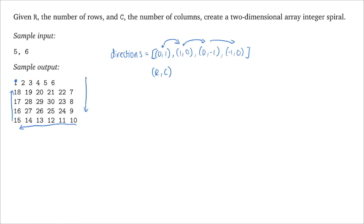To handle that, we check not only whether we've reached a boundary but also whether the next possible location is already populated. If it is, we immediately change direction. We track the current direction with a direction index, and when it reaches 3 we increment by 1 and take modulo 4, cycling back to 0. So we cycle 0, 1, 2, 3, 0, 1, 2, 3, and so on.